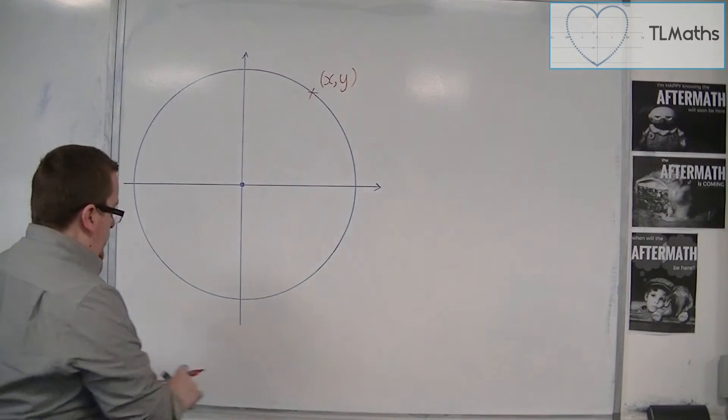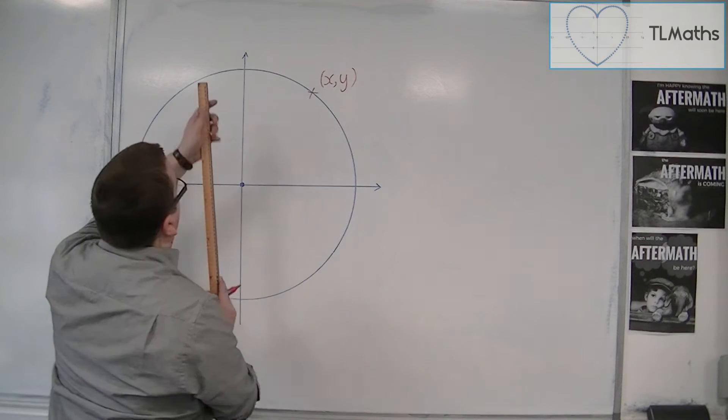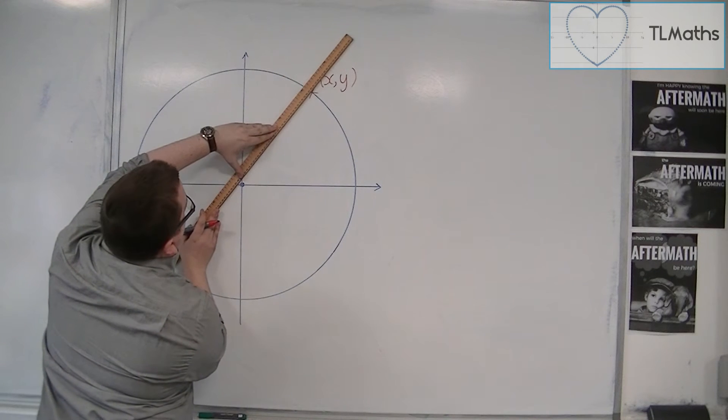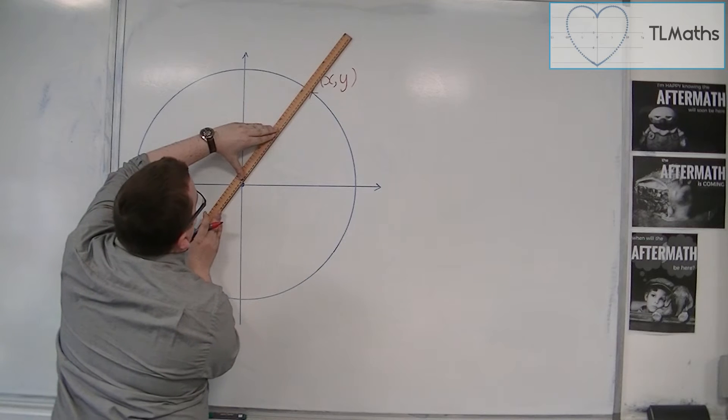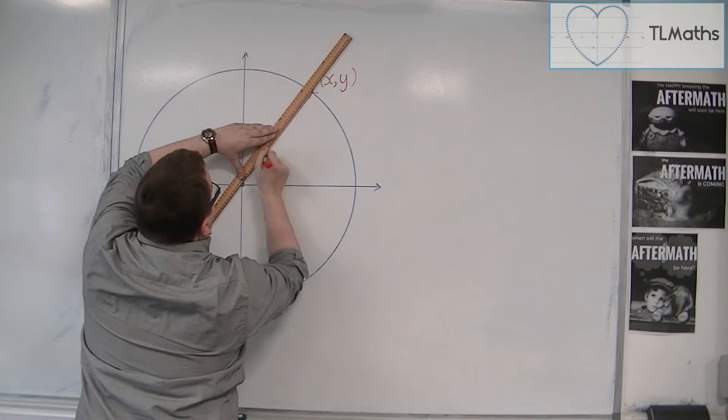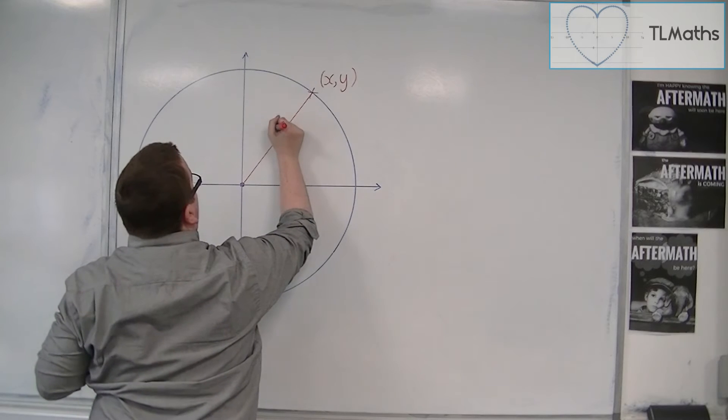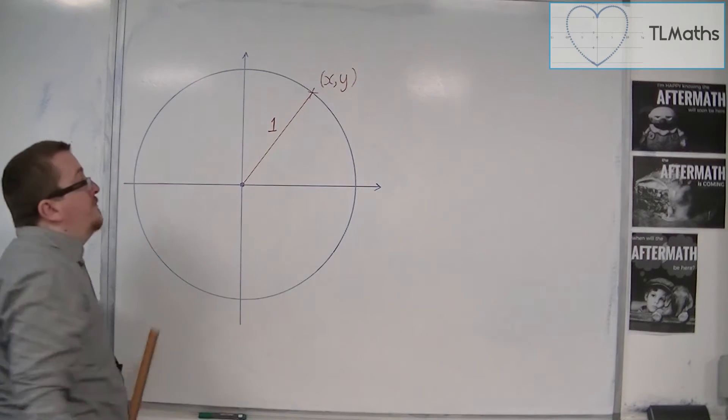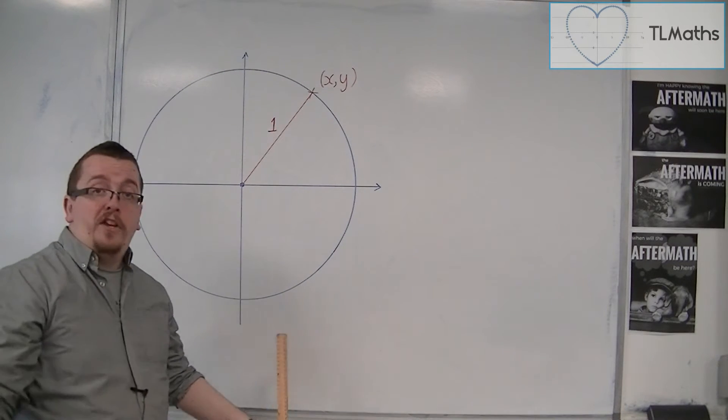Then if I draw a line from the center of the circle to that point, the length of that line will be a radius and it will have length 1, because it's a unit circle.